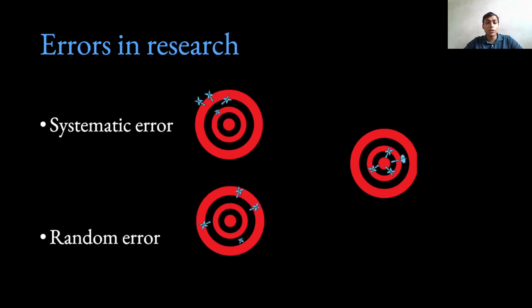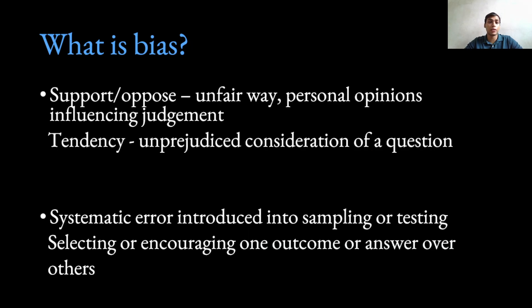Absence of systematic error in a test can be defined as accuracy, and absence of random variation in a test can be defined as precision. The systematic error is also known as bias. The literal definition of bias is to support or oppose in an unfair way — personal opinions which can influence judgment.